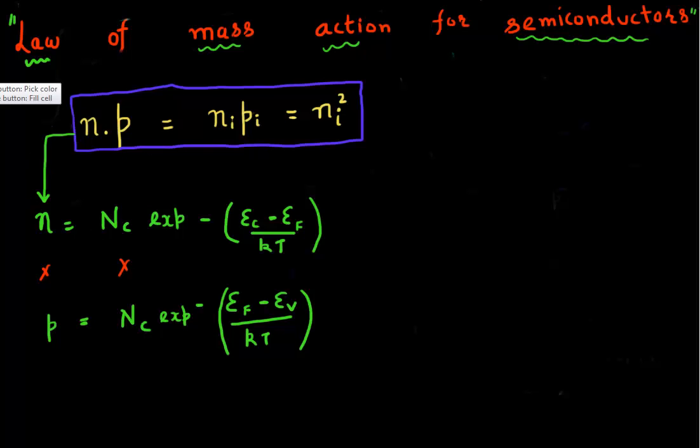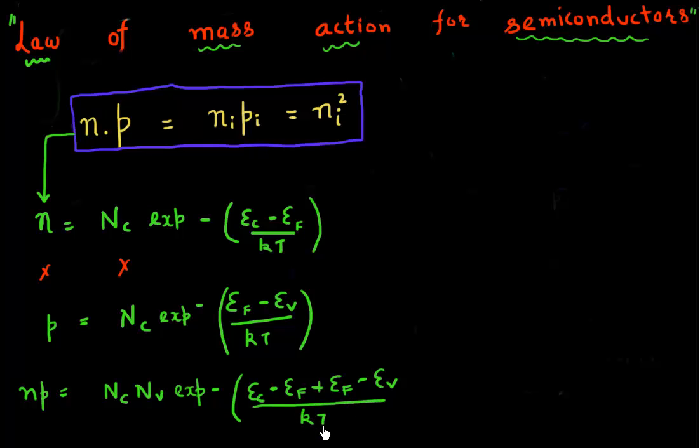On the left-hand side, I get n times p. On the right-hand side, I get Nc times Nv. When I multiply two exponential terms, I just add their exponents. So I take a minus sign common, and then I get Ec minus Ef, plus Ef from the hole term, and minus Ev by kT. And then Ef cancels with Ef.